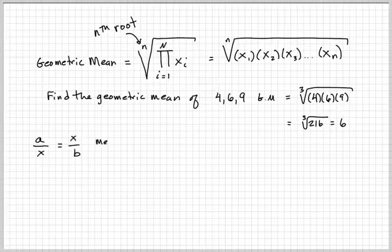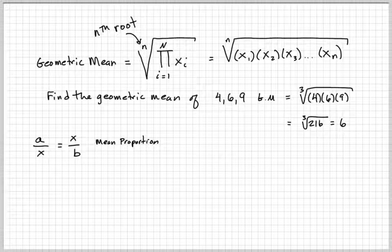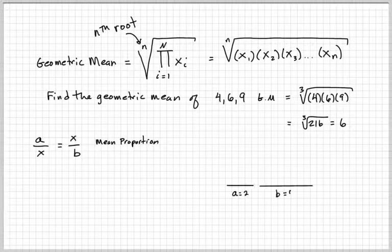One of the applications of the geometric mean is the mean proportion. For example, let's say you have two distances a and b, and a is equal to 2 and b is equal to 8.